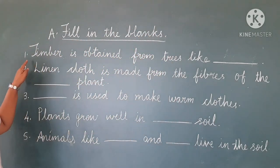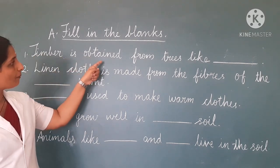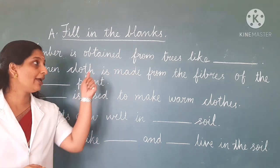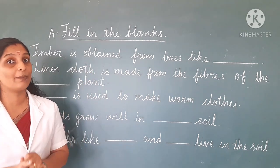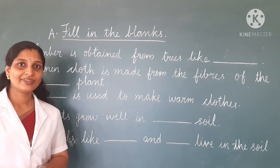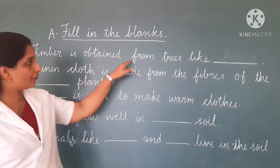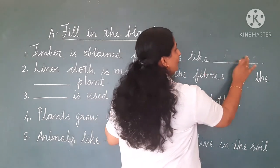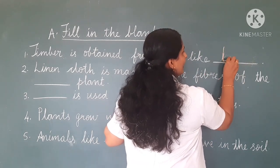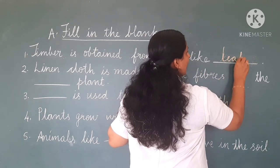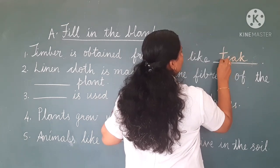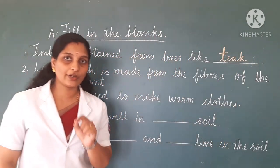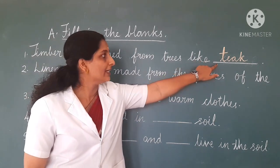Our first question is: timber is obtained from trees like blank. You can see the same sentence on page number 9. Timber is obtained from trees like teak. What is the spelling of teak? T-E-A-K. Teak. So, take your pencil and write teak.